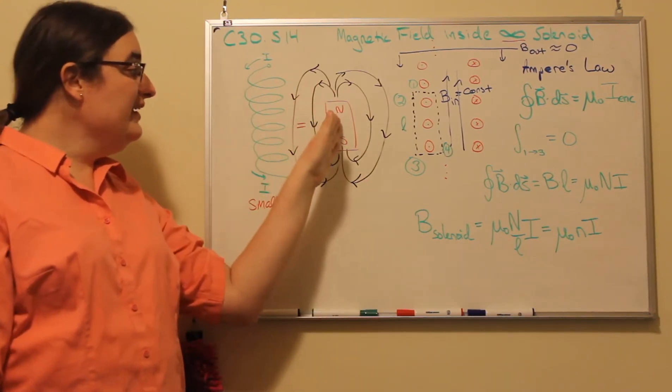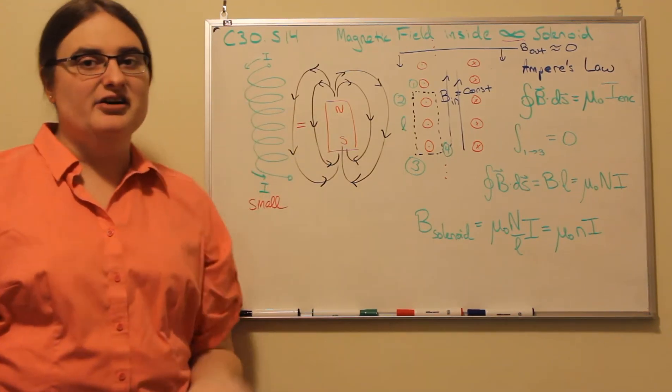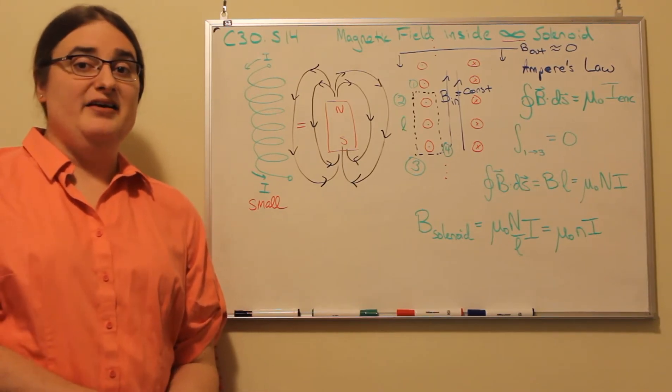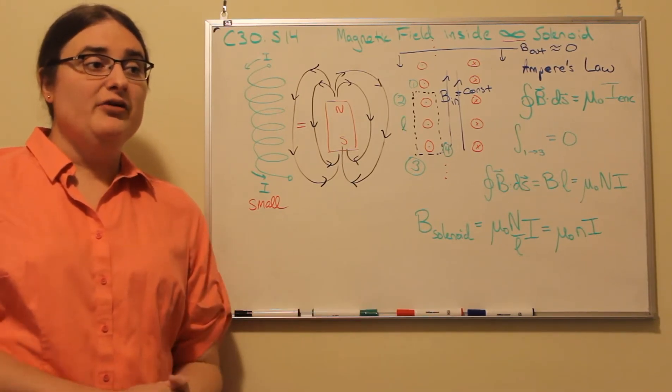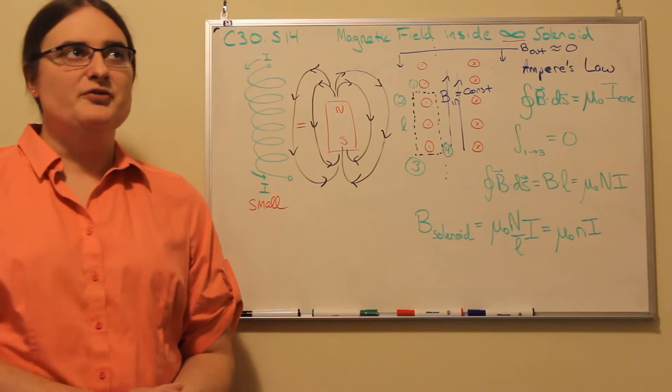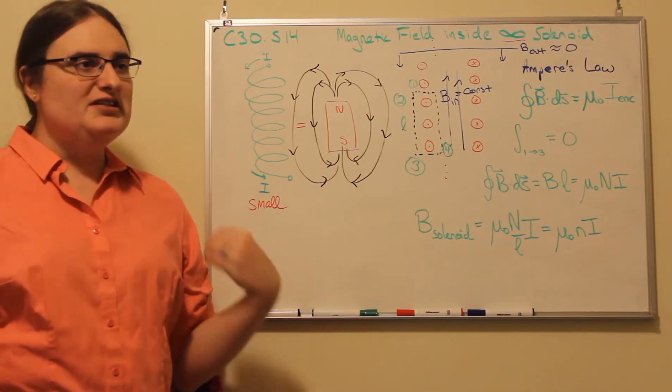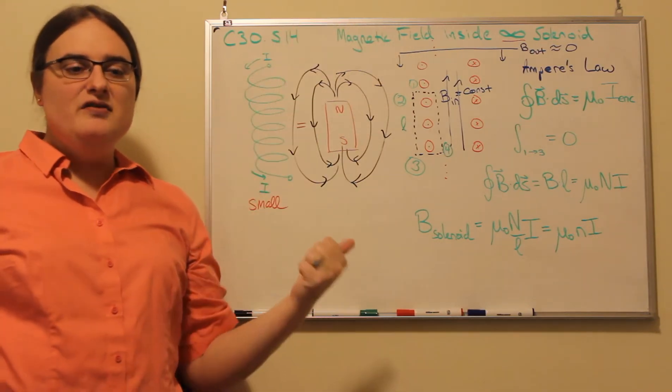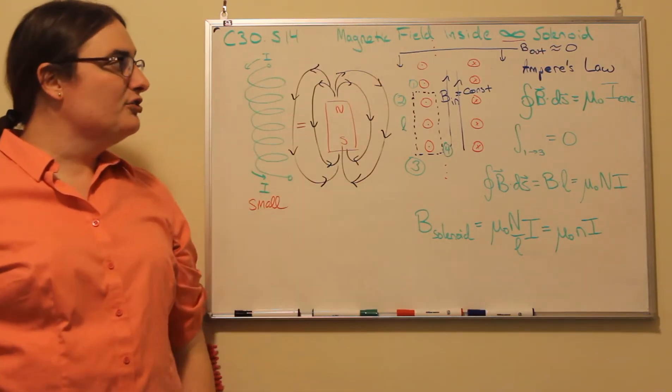If we could go inside, what we would see at the very center is a very strong, almost uniform magnetic field. If we want to figure out an approximation for that magnetic field, we could take a look at the case if we could imagine taking that solenoid and extending it infinitely in both directions.